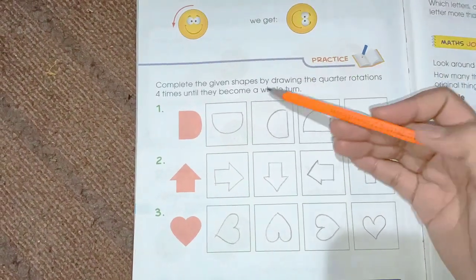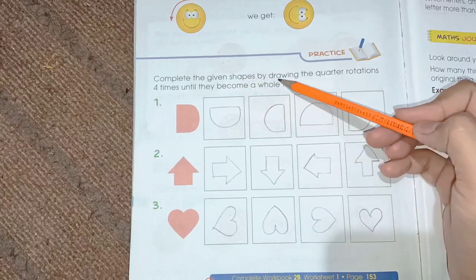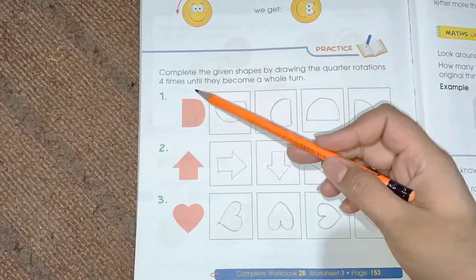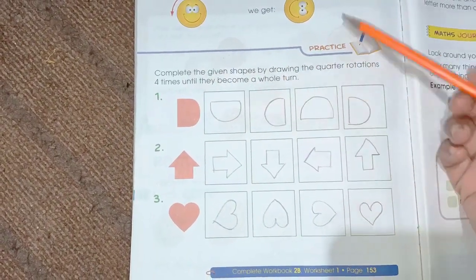Here we have the practice work. Complete the given shapes by drawing the quarter rotation four times until they become the whole turn.